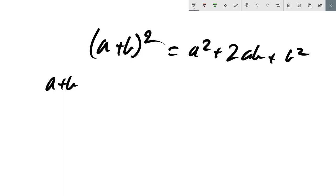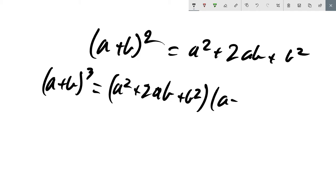So if I do that I will have (a plus b) cubed equals this thing: (a squared plus 2ab plus b squared) times (a plus b). And then I can just expand them normally.